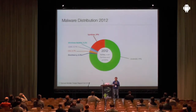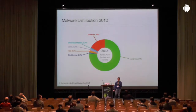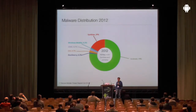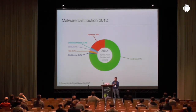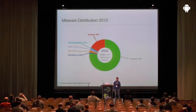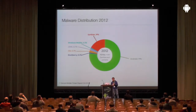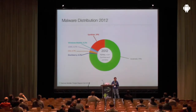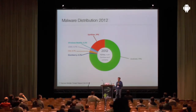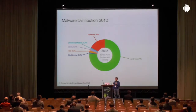Last year, the malware share of Android overtook the market share of Android itself, showing that Android has become very popular — and also very popular for the bad guys. There is a business opportunity there for the bad guys. iOS malware is roughly below 1%, so the question is: why are there so many malware for Android and why is it so popular for attackers?